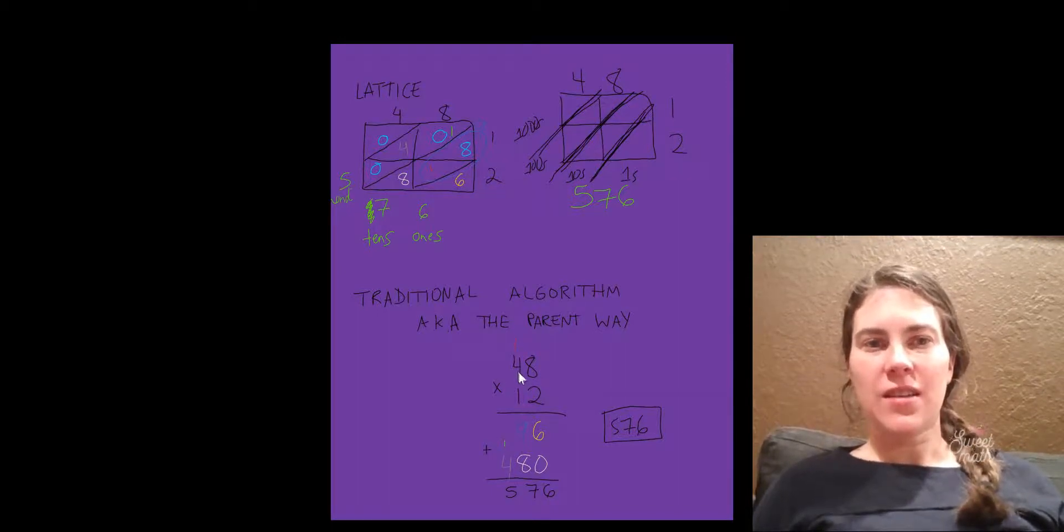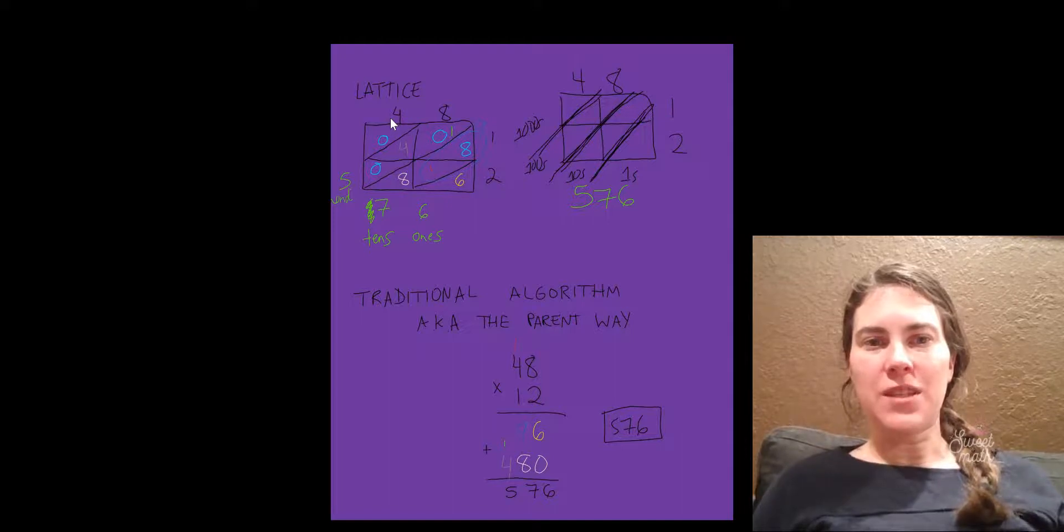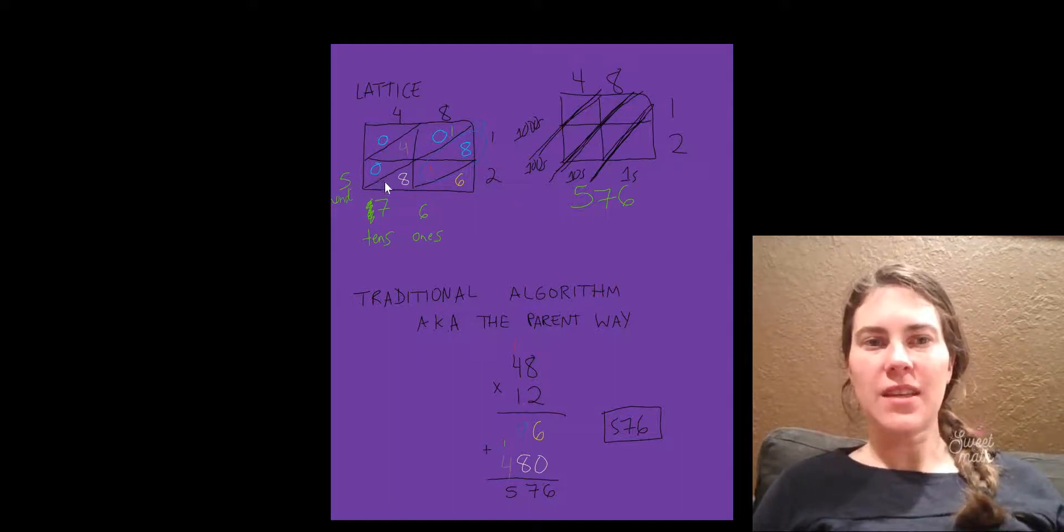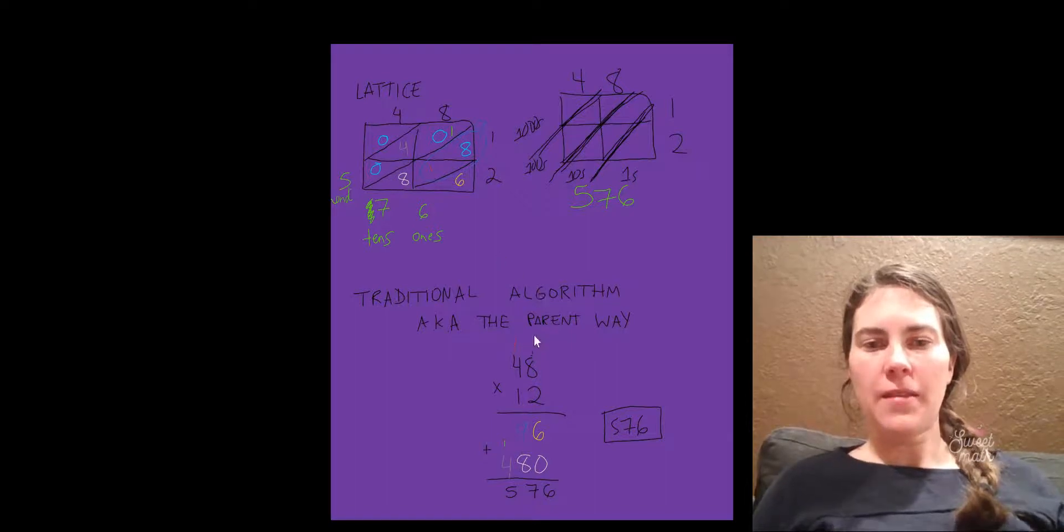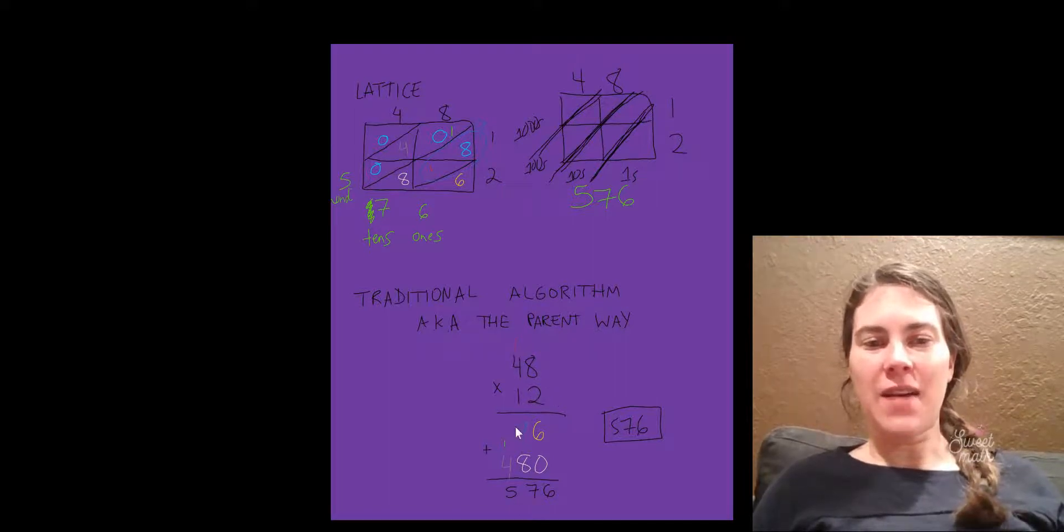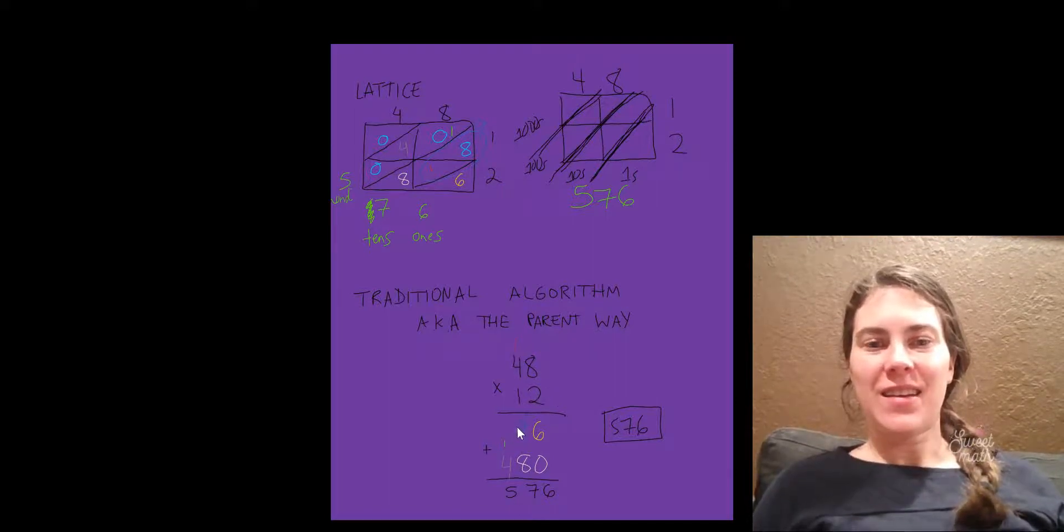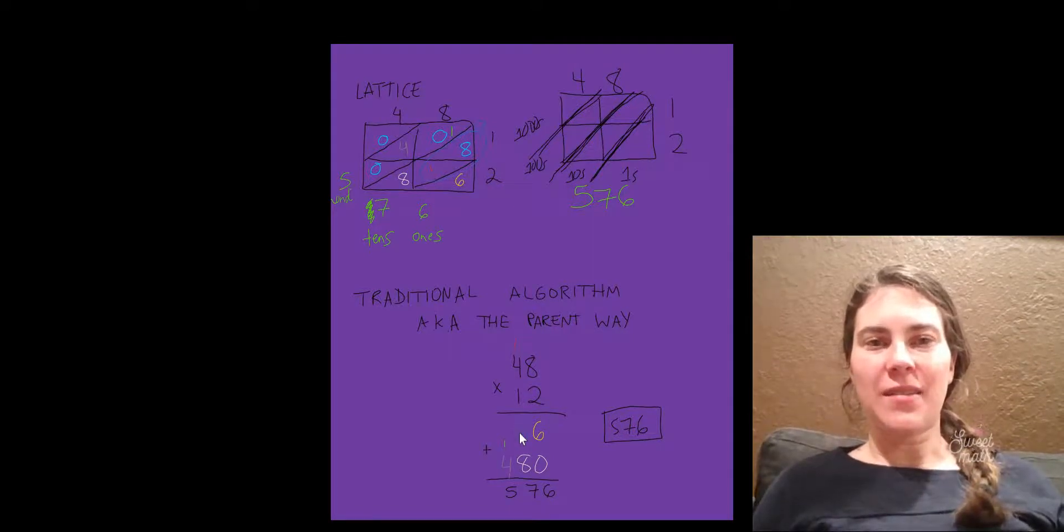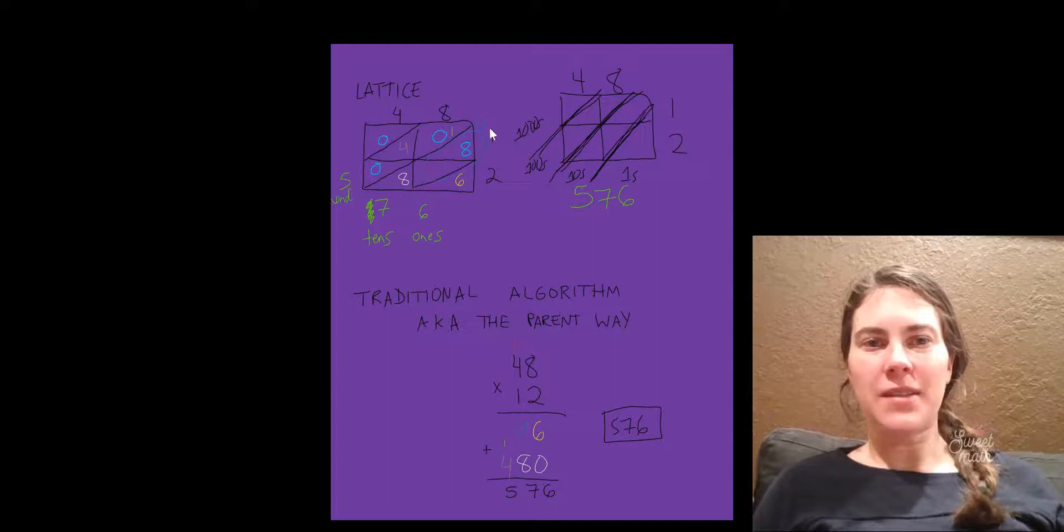Next thing we're going to do is the 4 times the 2 is 8. You can see the color code in there. 4 times 2 is 8, but you also add that 1 in, and now you have 9. In the lattice method, you're not going to see the 9. It's these two numbers combined.